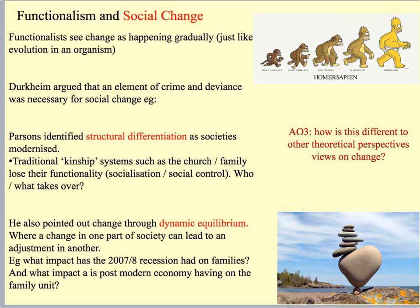We might see something very similar happening after the possible recession linked to COVID-19. People are sat at home who might have been planning to have a family, thinking their job security isn't there anymore, so they're not going to try to have a family. We can also link this to the impact the postmodern economy is having on the family unit — the postmodern economy needs people to move around the globe, work remotely, be flexible. We don't actually need as many workers, so we're getting fewer people having lots of children, families are getting smaller and more mobile, and we're getting more single-person households. That's an example of dynamic equilibrium.